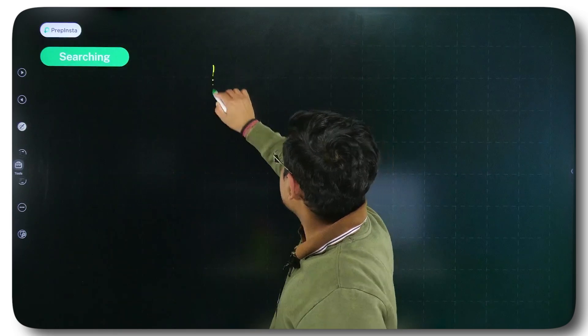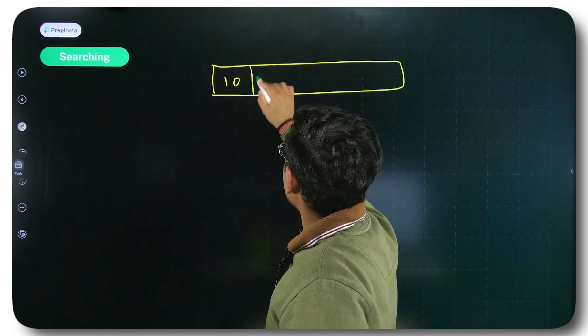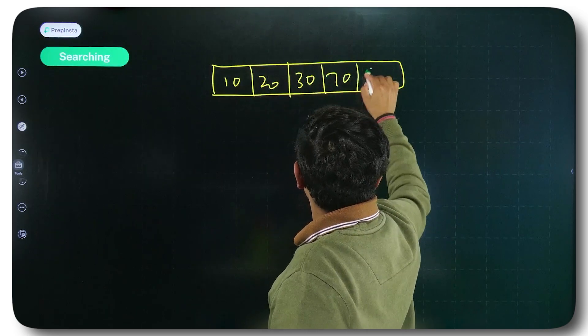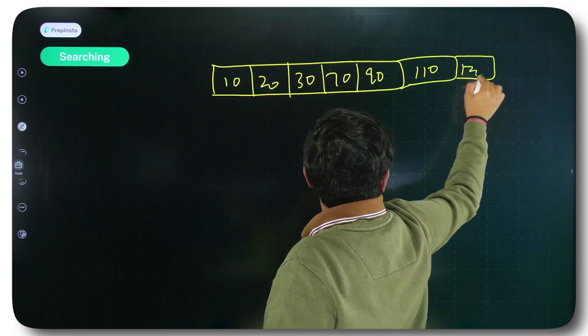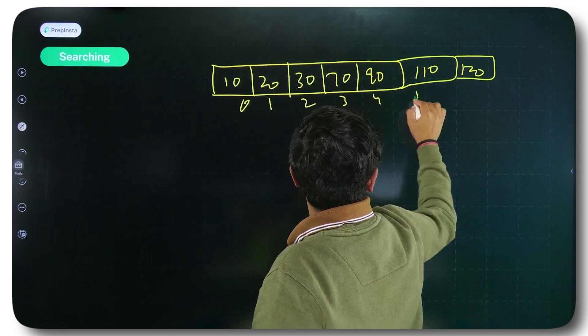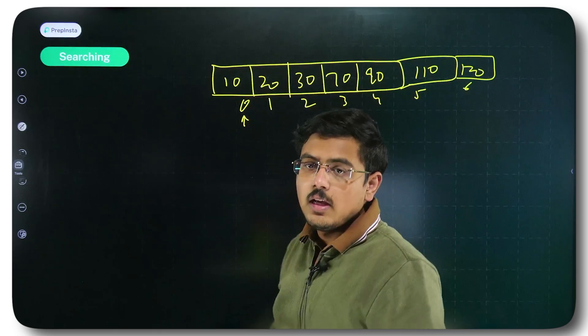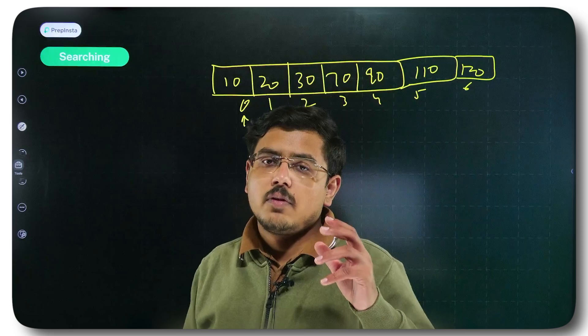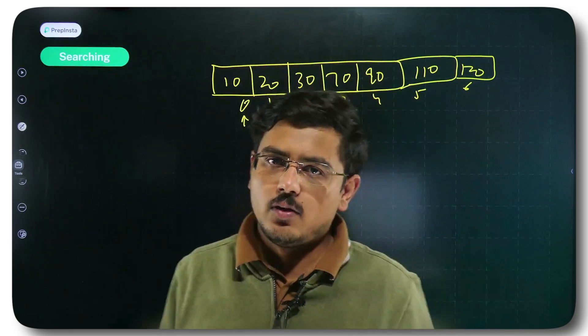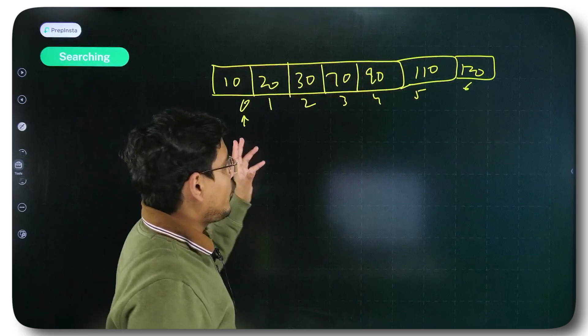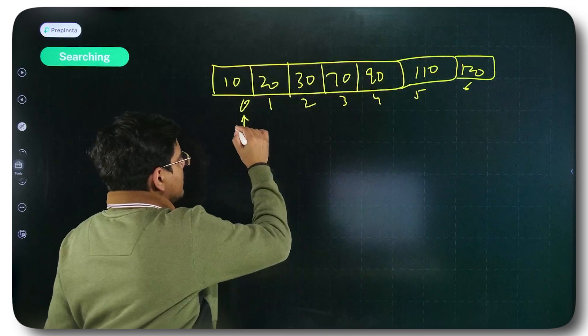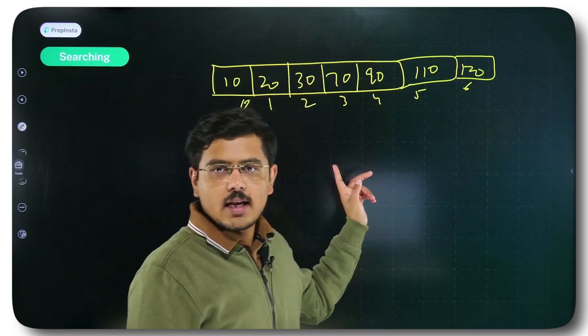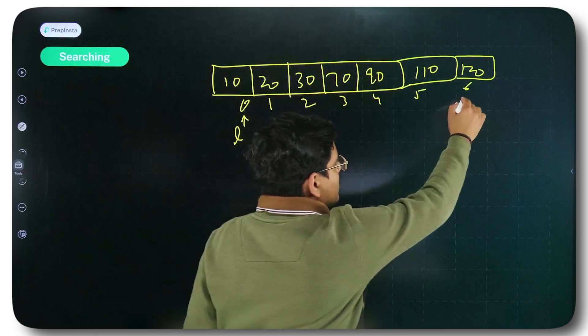Now I'll take one example and then I'll come to the program that was written. Say that you have these particular values. This is an array, 10, 20, 30, 70, 90, 110, 120. These are their indexes, 0, 1, 2, 3, 4, 5, 6. For those who don't know indexes, we have given you a video on arrays. Go ahead, check that video.